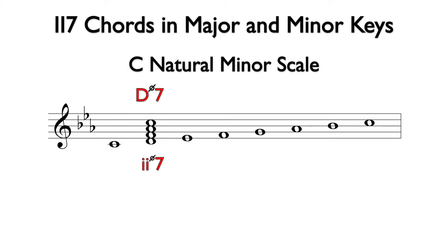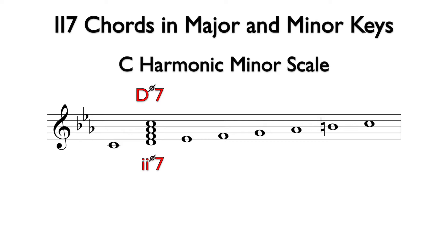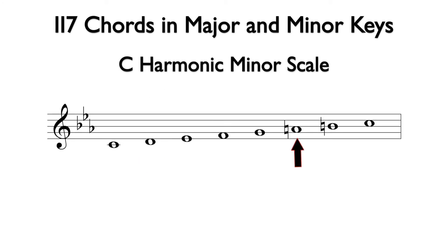The two half-diminished seventh chord is the common two-seventh chord in a minor key. If we raise the seventh degree of the natural minor scale, it becomes harmonic minor. In the key of C minor, the B-flat becomes B natural. Since B natural is not part of the D half-diminished seventh chord, this chord remains the same in both natural and harmonic minor.